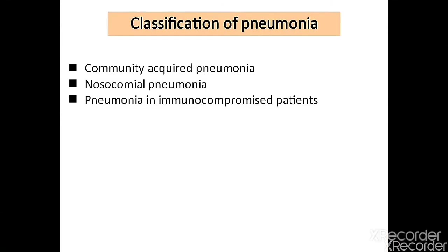The classification of pneumonia has many bases — morphology, anatomic site, causative agent — but the three main categories are: community-acquired pneumonia (CAP), nosocomial pneumonia, and pneumonia in immunocompromised patients. Community-acquired pneumonia means pneumonia acquired in the community or before 48 hours of hospital admission.